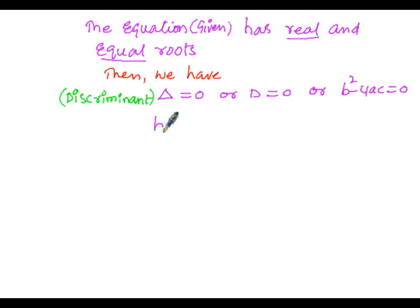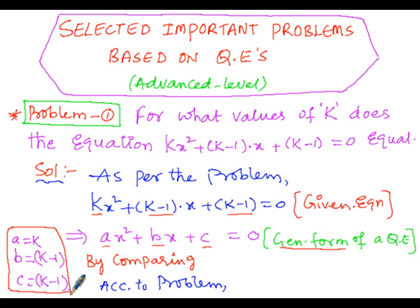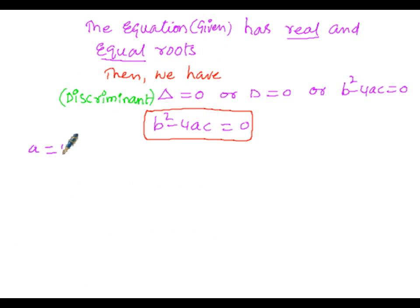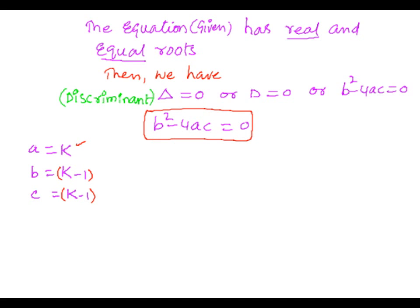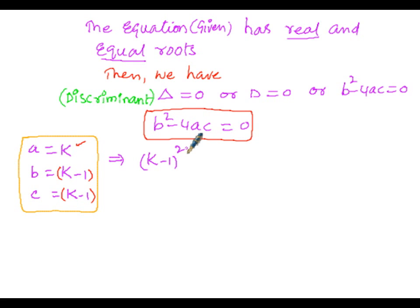Therefore b² - 4ac = 0. Substituting the values — a = k, b = (k-1), c = (k-1) — we get: (k-1)² - 4·k·(k-1) = 0.